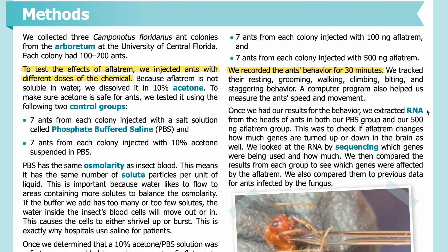Once we had our results for the behavior, we extracted RNA from the heads of ants in both our PBS group and our 500 nanogram aflatrem group. This was to check if aflatrem changes how much genes are turned up or down in the brain as well. We looked at the RNA by sequencing which genes were being used and how much. We then compared the results from each group to see which genes were affected by the aflatrem, and also compared them to previous data for ants infected by the fungus.